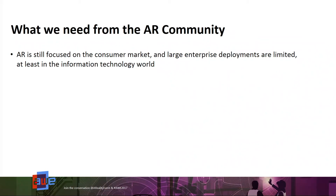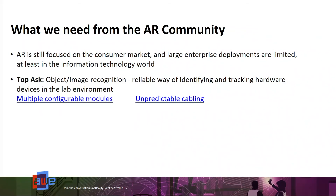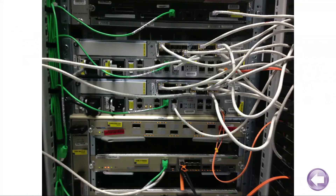Right now, it works only for an installation use case — you've taken something fresh out of the box, and it's able to recognize it without markers. It recognizes the actual image of the device. The problem, though — there is cabling all over the place. You cannot really predict how a device is going to look in a lab environment. So we don't really have a solution for this. How do we get over this challenge? Without a specific marker, how do you recognize devices like this in the lab?